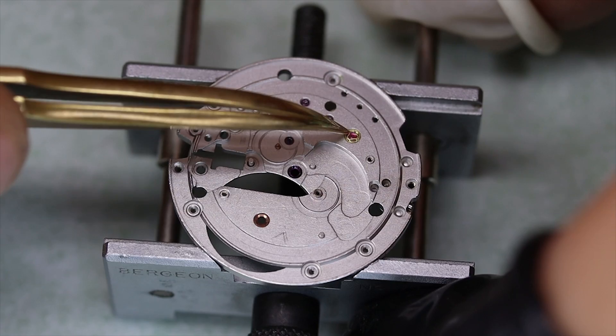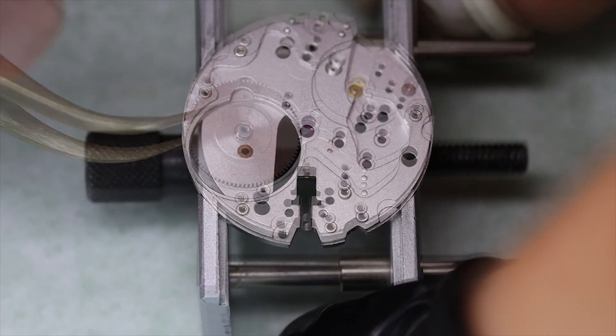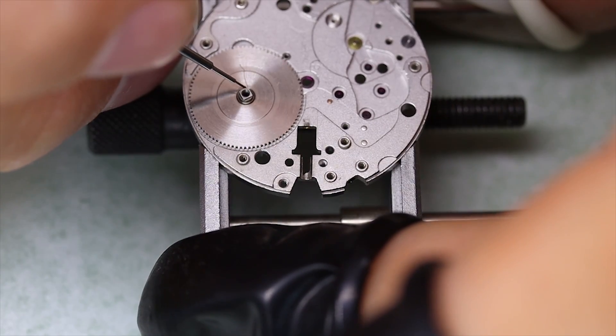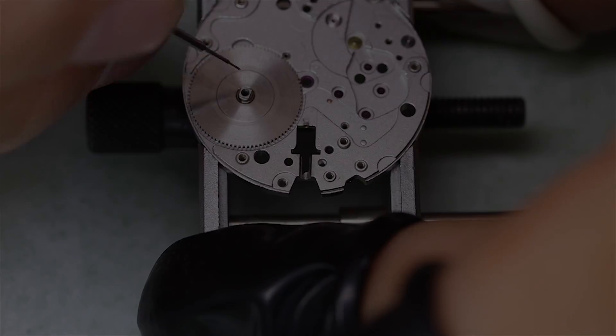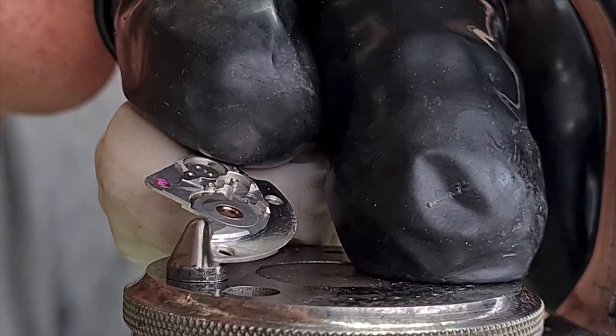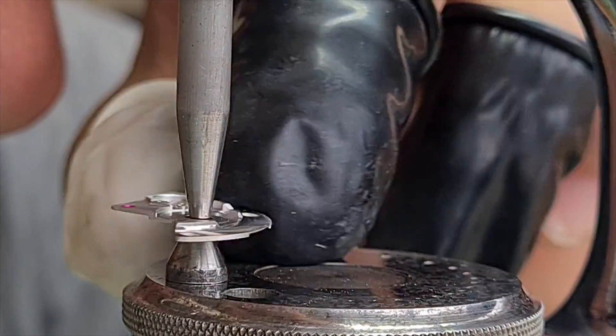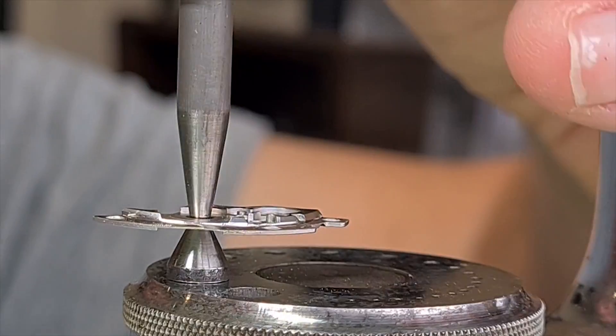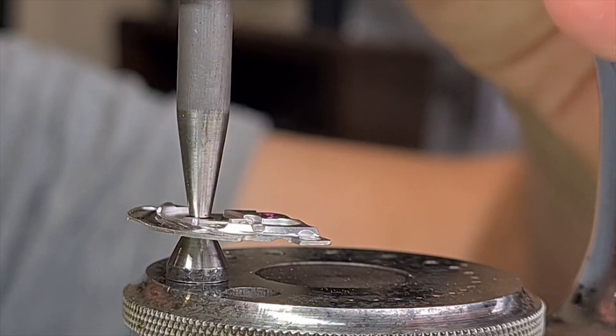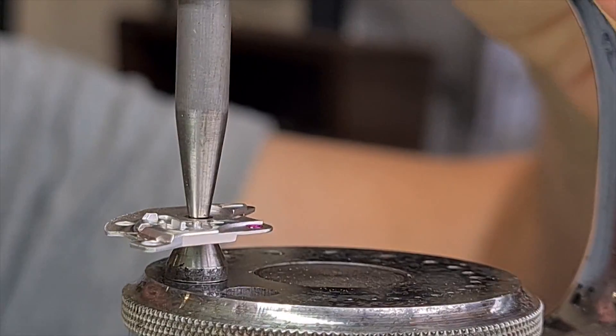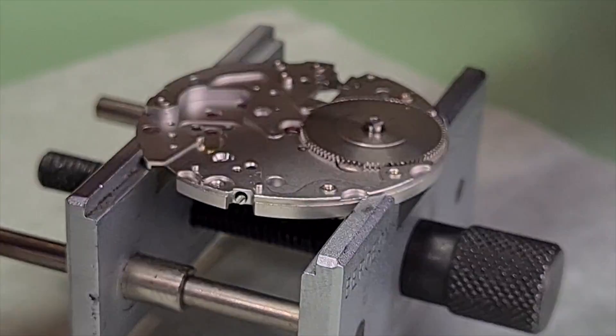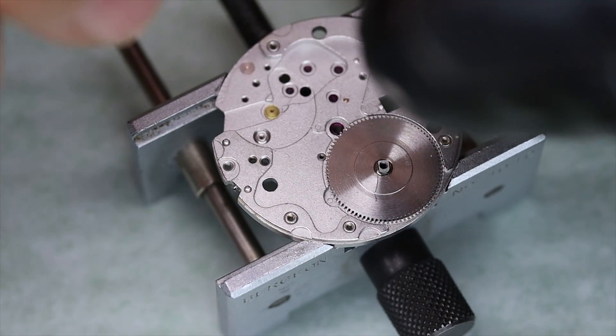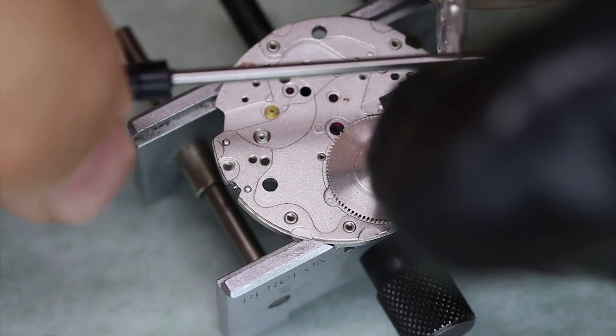For the barrel you might have seen that it says do not open, and while I would normally respond to an order like that with 'no one tells me what to do except my wife,' we're going to obey it this time and see if it works well enough to keep the watch ticking. But in order to do that we have to also address the play that we saw in the barrel arbor on the barrel bridge. So I'm going to basically hammer the hole a little bit smaller with a domed punch and a domed anvil underneath. When we got it so small that it almost doesn't fit, we're going to use a smoothing broach. The smoothing broach will open the hole up a little bit and in the process it will also harden or compress the metal around the hole.